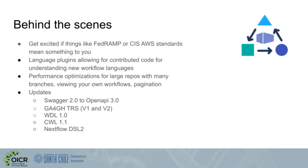For the community, we've updated our implementation of the GA4GH TRS standard from version 1 to version 2, and both are supported. We've added support for WDL 1.0, CWL 1.1, and Nextflow DSL 2.